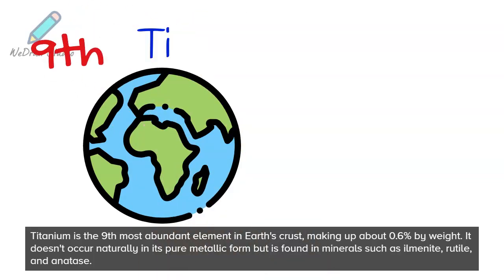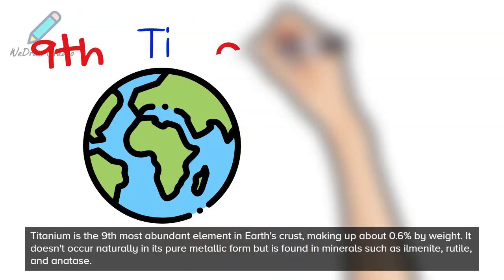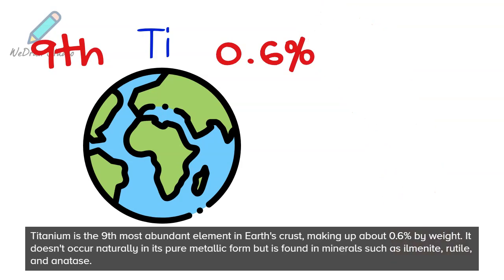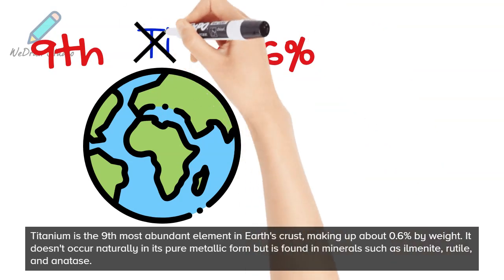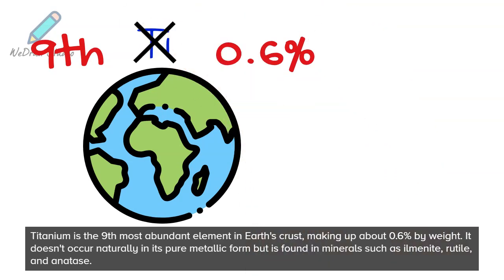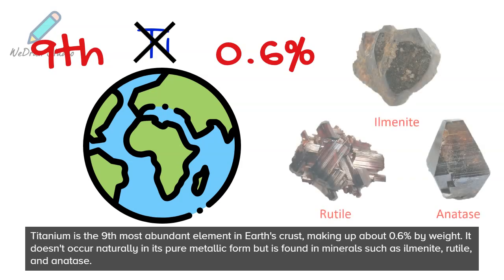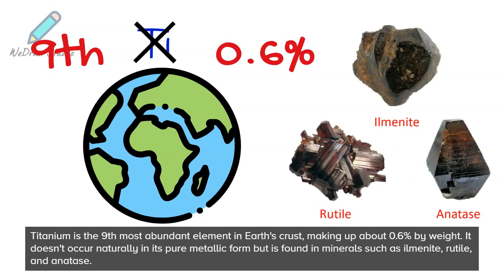Titanium is the ninth most abundant element in Earth's crust, making up about 0.6% by weight. It doesn't occur naturally in its pure metallic form, but is found in minerals such as ilmenite, rutile, and anatase.